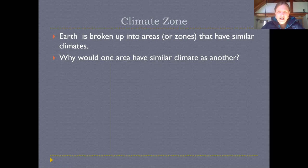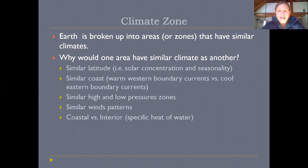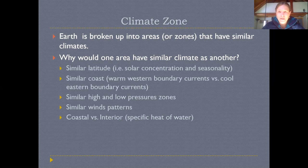I'd encourage you to pause and brainstorm, but here are some things we've talked about that cause different areas — perhaps in different hemispheres or continents — to have similar climates. One would be latitude: different latitudes have different amounts of solar radiation because of their angle relative to the sun. They also experience different seasonality, and being on an east or west coast influences ocean currents, which affects humidity and precipitation.